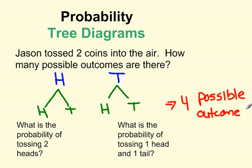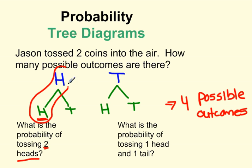If we have the question: what is the probability of tossing two heads? We're going to look at our tree diagram and find out which branches have two heads. So we have one head, two heads — there's one. This one's a head and a tail, so that doesn't count. We're looking for two heads. Tails-heads and tails-tails don't count either. So there was only one way in which we had two heads. The probability equals one out of a total possible four, so the probability is one over four.